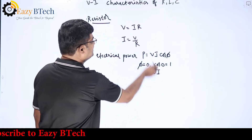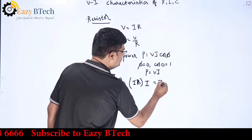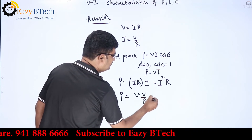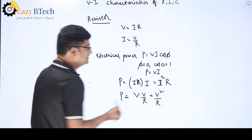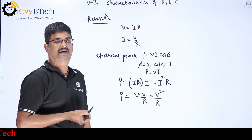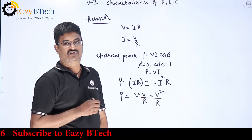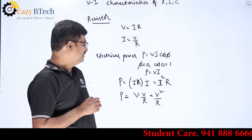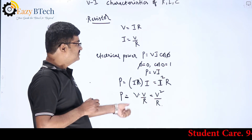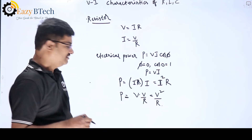Substituting v = iR into the power equation: p = iR·i = i²R. Alternatively, substituting i = v/R: p = v·(v/R) = v²/R. So the voltage equation is v = iR, current equation is i = v/R, and the power can be expressed as p = v·i = i²R = v²/R.